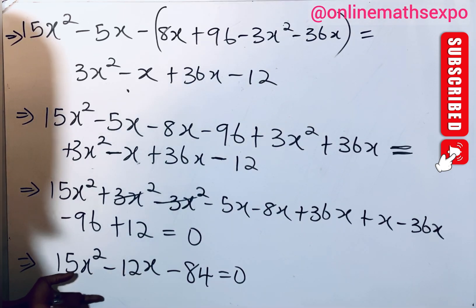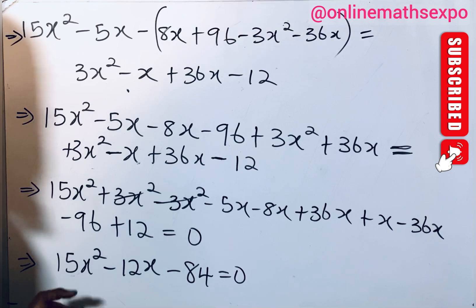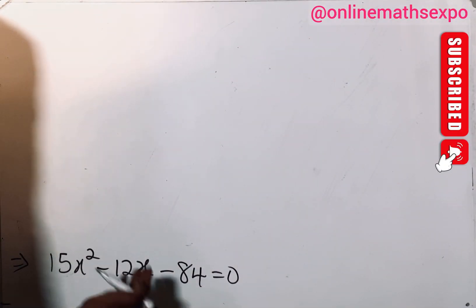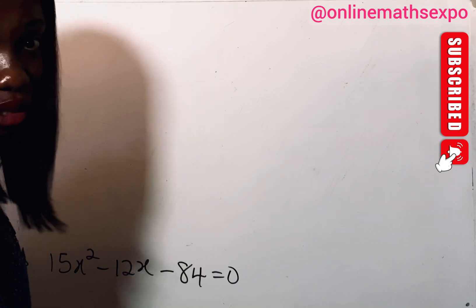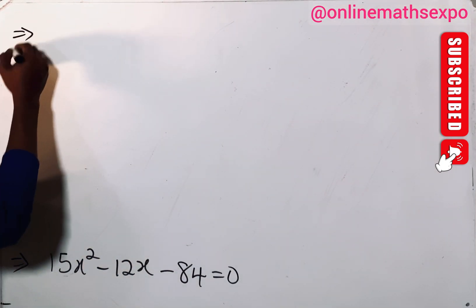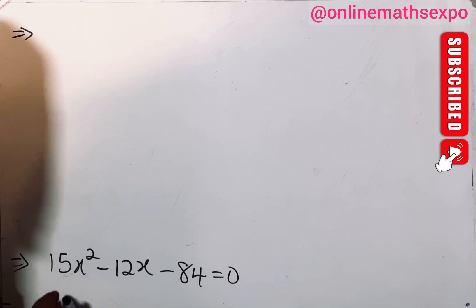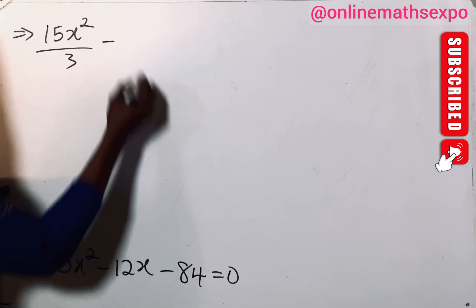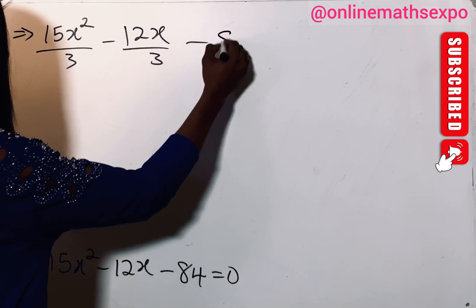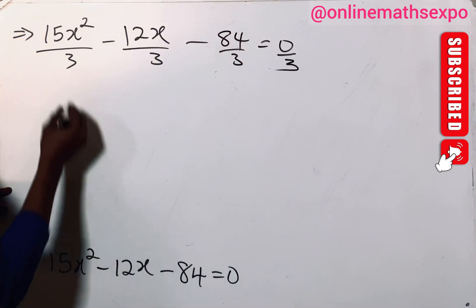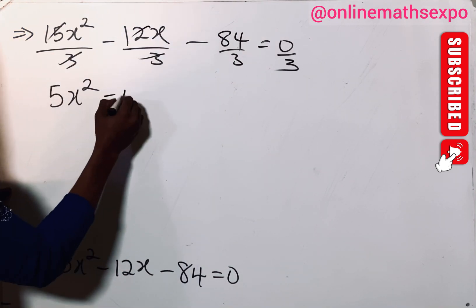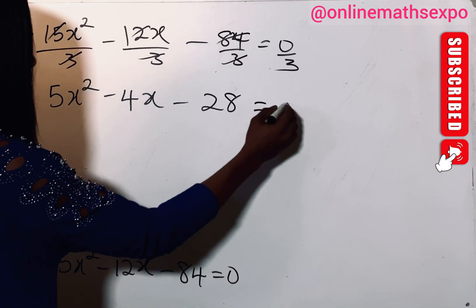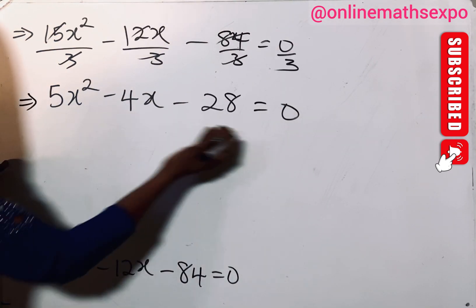This equation is quadratic because the highest power of x is 2. To simplify, divide each term by 3 — the common factor — to make it easier to solve. Dividing gives us 5x² − 4x − 28 = 0.